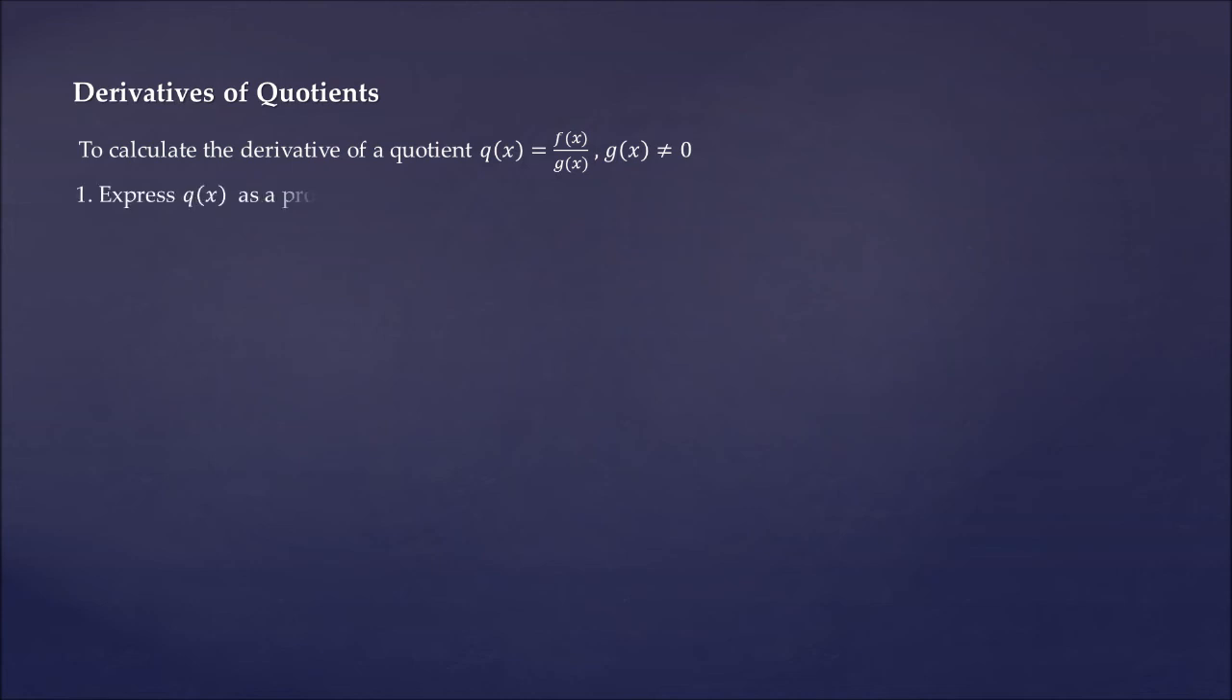You can approach it this way: first, express q(x) as a product; differentiate the resulting expression using product and chain rules as they apply; and then simplify the result, bringing all exponents to be positive. It's just a nicer form—not really a requirement. Some people may impose this, some not so much, but simplification is necessary.